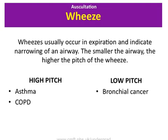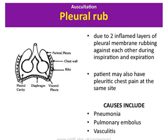A pleural rub is a creaking sound similar to that produced by bending stiff leather or treading on fresh snow. It is produced when inflamed parietal and visceral pleurae move over one another. It is best heard with a stethoscope diaphragm. It may be heard only on deep breathing at the end of inspiration and the beginning of expiration. A pleural rub is usually associated with pleuritic pain and may be heard over areas of inflamed pleura in pulmonary infarction, pneumonia, or vasculitis.